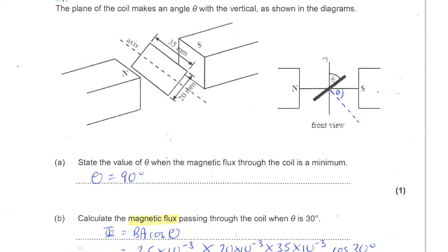The plane of the coil makes an angle of theta with the vertical as shown in the two diagrams. At this point you need to take great care as to which angle you have been given. So when you look at the datasheet, for example, and see the equation that flux equals BA cos theta...